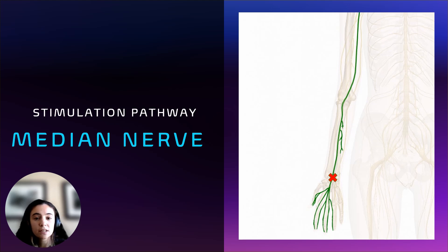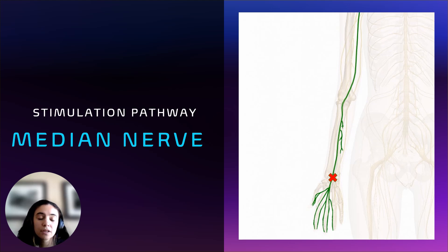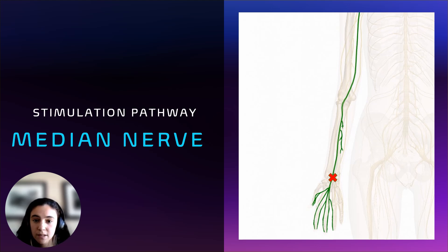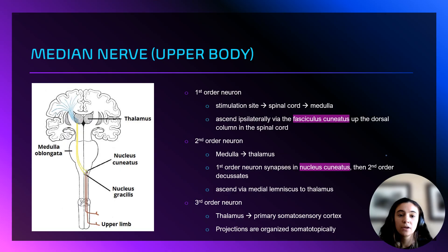Let's discuss the median nerve stimulation pathway, which is typically the most common stimulation site for recording upper extremities. The stimulation site is located at the wrist, where the red X is. A cathode and anode are placed 2 to 3 centimeters apart and then stimulated. The stimulus activates the first order neuron, which carries the signal up the arm and into the spinal cord.